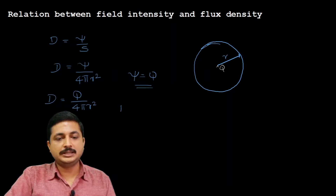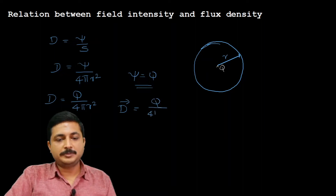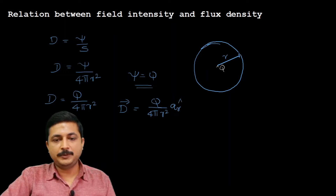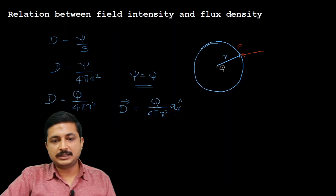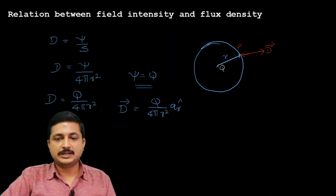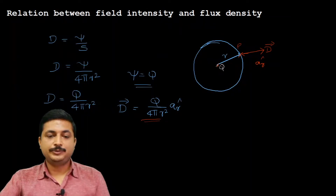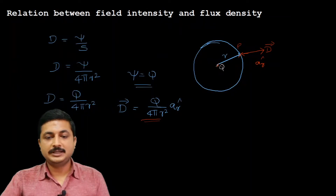Extending this idea to the vector form: if I want to write D as a vector, then D vector equals Q divided by 4πr² in the direction â_r. At any point P on the surface of the sphere, the D vector is radially outwards, which is the direction represented as â_r. So D vector equals Q divided by 4πr² times â_r.